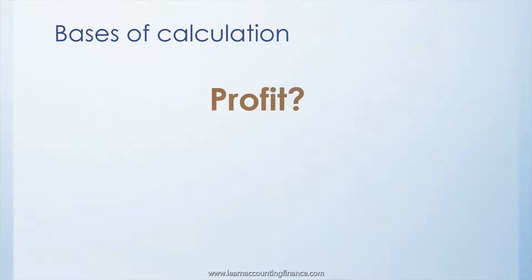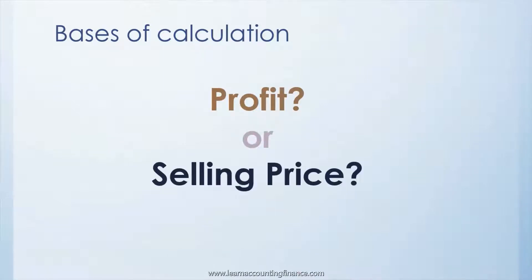An important question is what is the basis of calculation that we use in calculating sales variances? The most commonly used bases are either profit — which could be your gross profit or your contribution — and selling price, which is really the price of the product. The answer is it really depends. If you are calculating the impact of sales variances on profitability, you will use profit or contribution as the basis. If you are measuring the impact on total sales, you will use selling price as the basis.